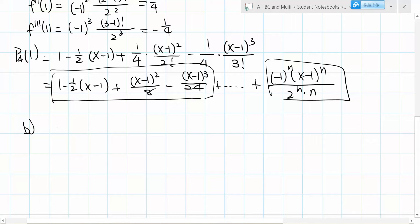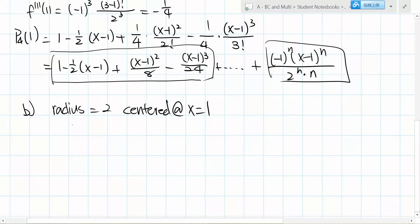Finding the interval of convergence: since the radius is 2 and it's centered at x equals 1, we know |x-1| < 2, which gives us -1 < x < 3. This is the interval of convergence. Now we need to test the endpoints.